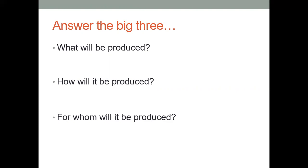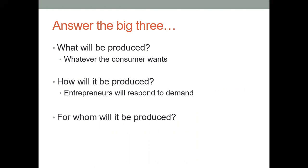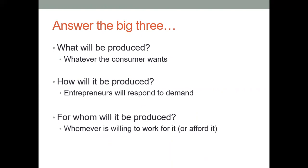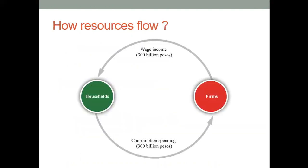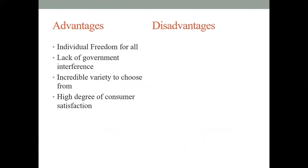What would be produced? The things consumers want and are willing to pay for. The entrepreneur responds to the demands and needs of the people. For whom? For those who have money to afford it — if you don't have money, you cannot have the product. The system operates between businesses and firms with no government intervention. This system fails because it does not take into consideration social class and the needs of poor people.